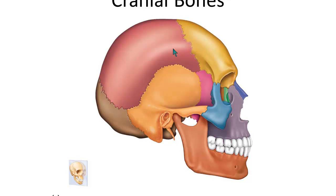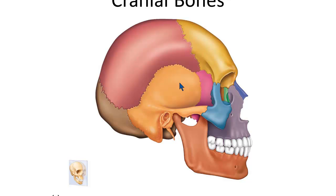The temporal bone is on the side of the skull. The temporal bone has a number of different structures, but the one structure you need to know that identifies it as a temporal bone is the external auditory meatus — essentially the ear canal. It's lined with a mucous membrane that secretes wax instead of mucus. The bone around that external auditory meatus is the temporal bone.